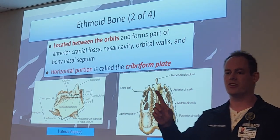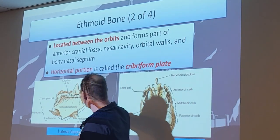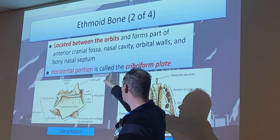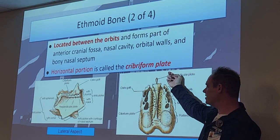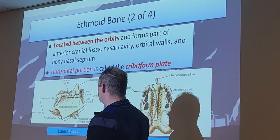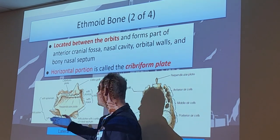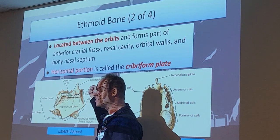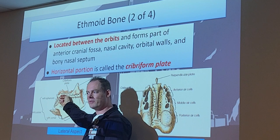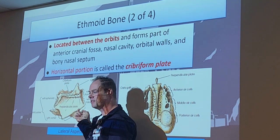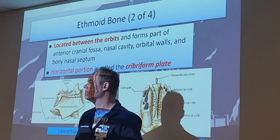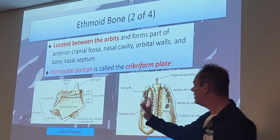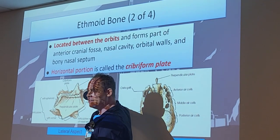The horizontal portion - that long ridge on top - is called the cribriform plate. There's also the vertical portion we call the perpendicular plate. Looking at it from the side, the ridge on top is the cribriform plate, and the big flat portion going down is the perpendicular plate. The crista galli is just on top of the cribriform plate - it retreats off the top like a horn sticking up.